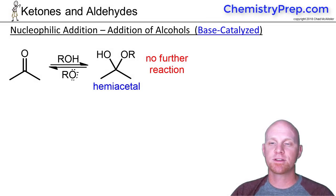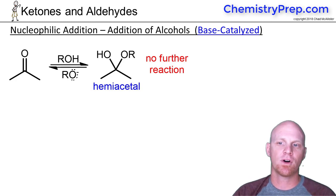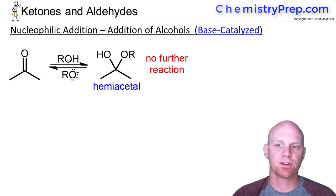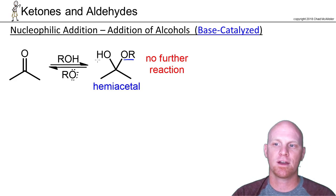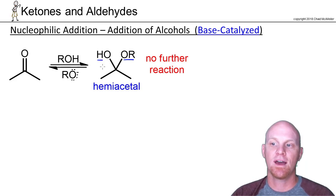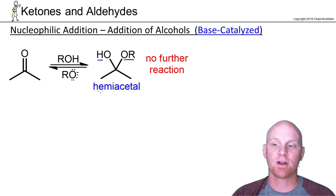Similar to the addition of water across the carbonyl is the addition of alcohols. We can use any alcohol, ROH generically. The result is we add an OR to the carbon and an H to the oxygen — an alcohol added across that carbon-oxygen bond. We call this a hemiacetal.